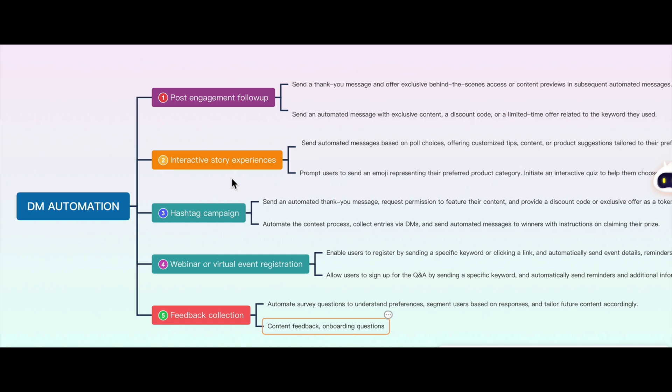Now let's talk about campaigns using story triggers. You can create polls in stories and ask for audience opinions. If you have 4-5 different services, you can send an emoji representing each, and automate a reply based on that particular emoji. You can also trigger automated responses based on any keyword reply. For example, if a user likes a particular product, you can send them a video related to that product automatically.